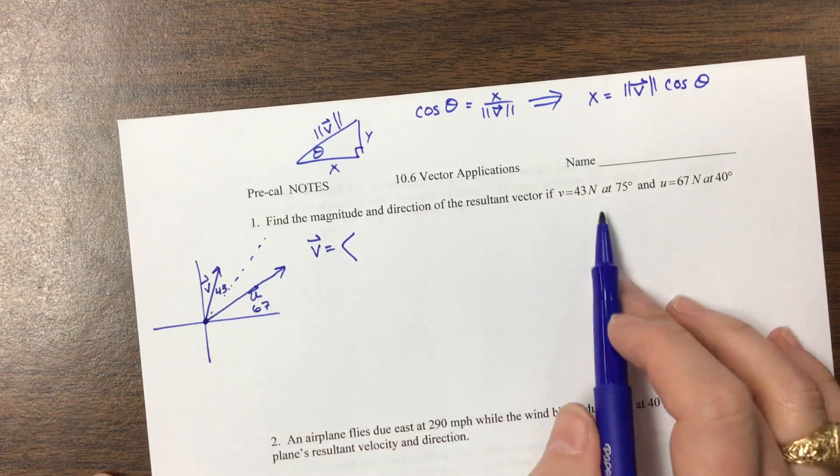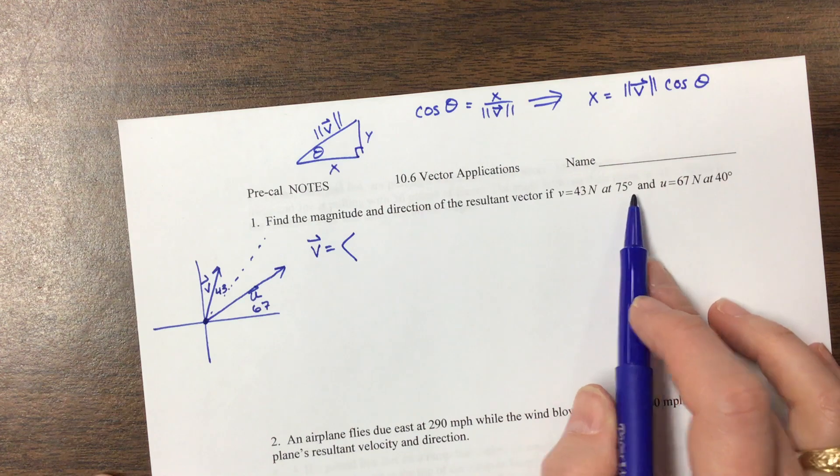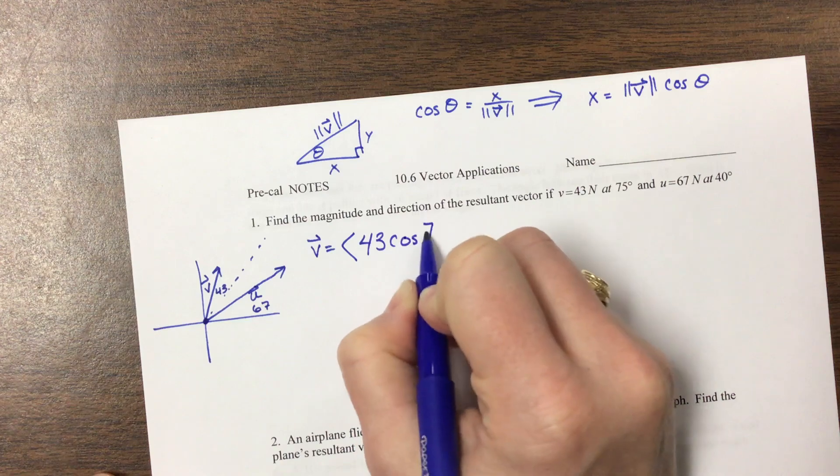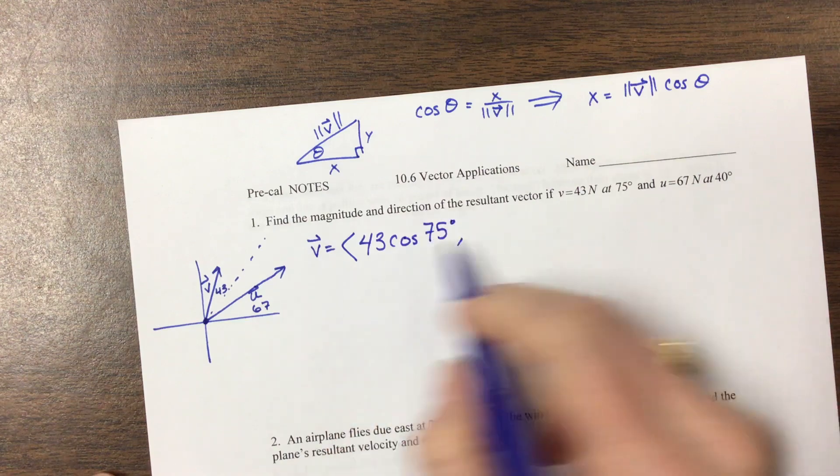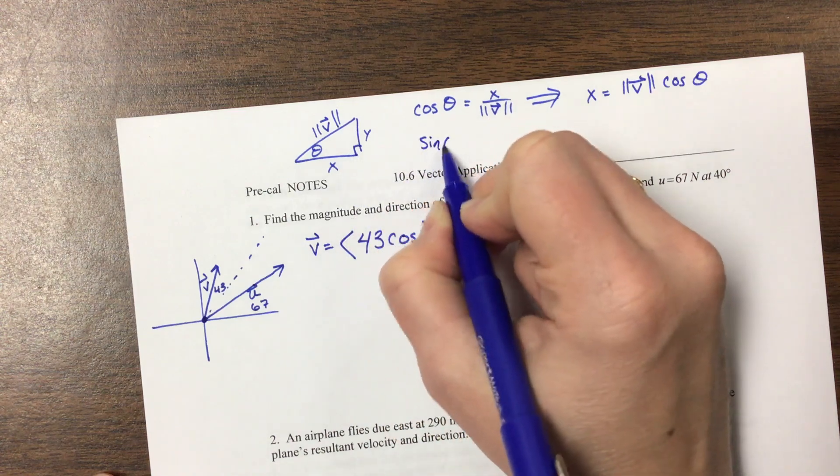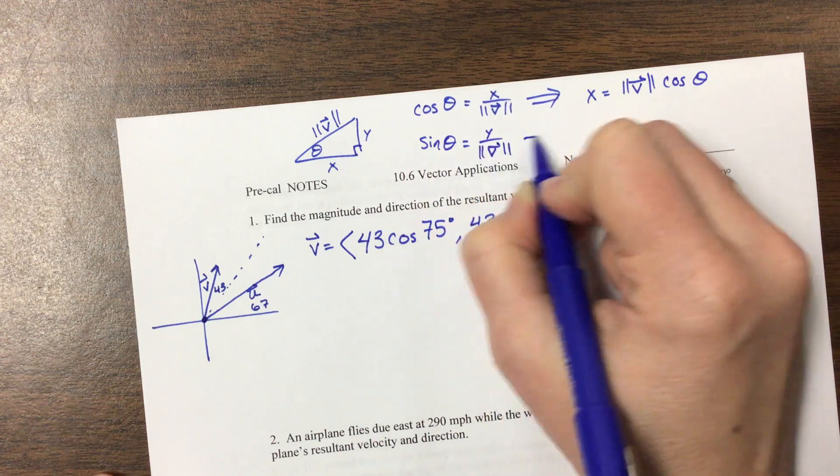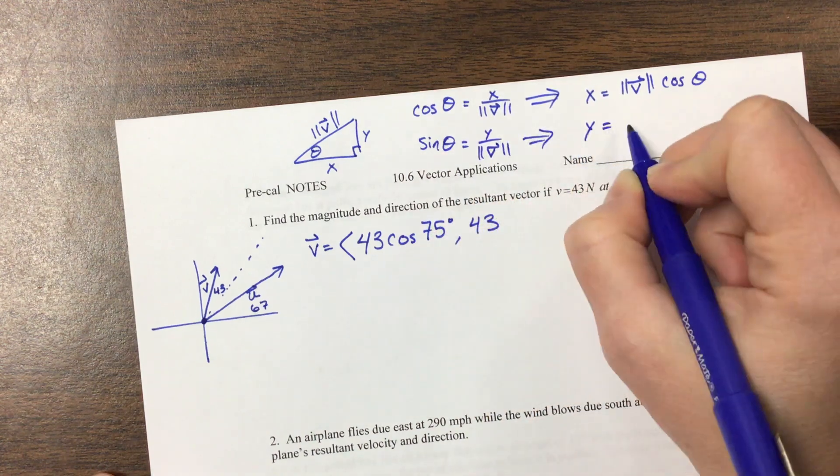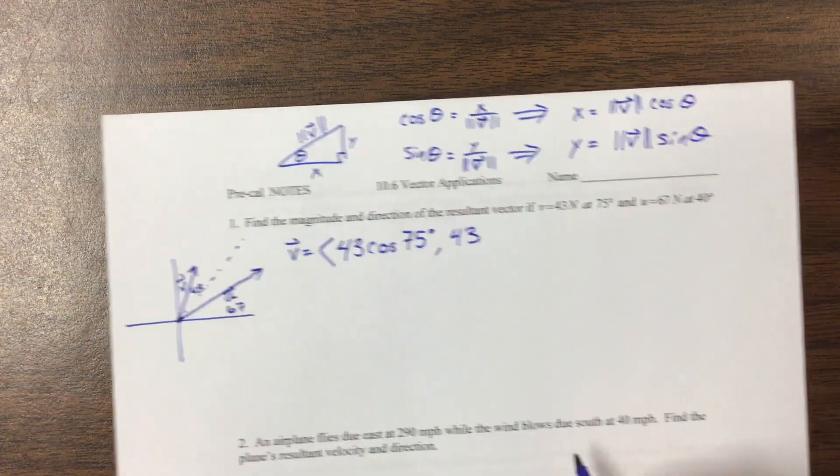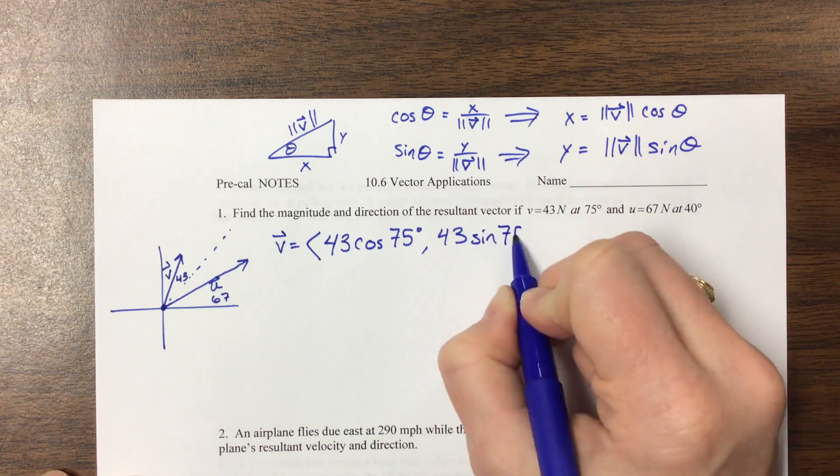So this first one right here, V, had a magnitude and an angle. So this is its magnitude, and this is its theta. So the X value is going to be 43 cosine of 75 degrees, and its Y value is going to be 43, well, okay, we didn't talk about that part, but sine of theta would be equal to the opposite over the hypotenuse, which would imply that Y is equal to the magnitude of V times sine of theta. Theta was 75 degrees.